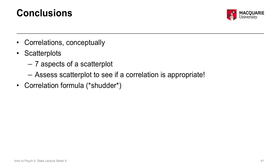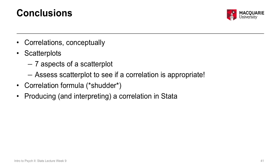We briefly looked at the correlation formula — you don't need to know the details, just understand conceptually how that correlation coefficient magic number comes about. More importantly, we looked at producing and interpreting the correlation using Stata. Once you have your data set with your two numeric variables and you've checked your assumptions, you should know how to run the correlation and interpret the output.